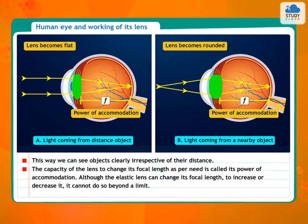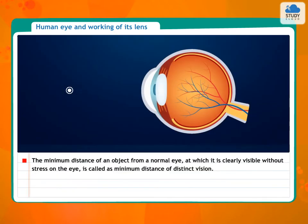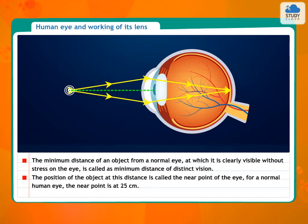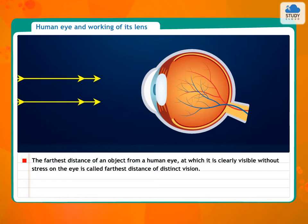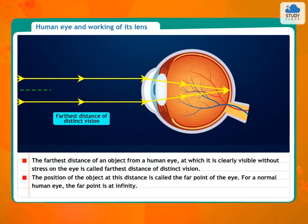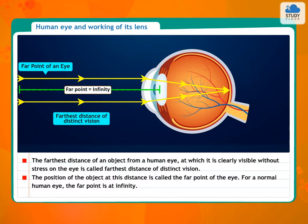Although the elastic lens can change its focal length to increase or decrease it, it cannot do so beyond a limit. The minimum distance of an object from a normal eye at which it is clearly visible without stress on the eye is called the minimum distance of distinct vision. The position of the object at the farthest distance from a human eye at which it is clearly visible without stress is called the far point of the eye. For a normal human eye, the far point is at infinity.